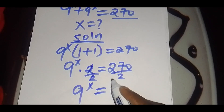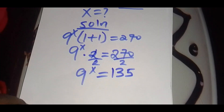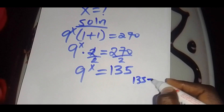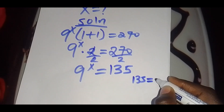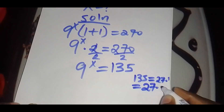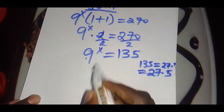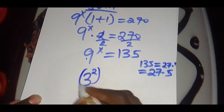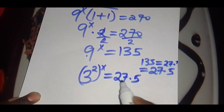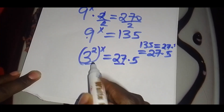So we have 9^x equals 135. Remember, 135 can be expressed as 27 multiplied by 5. We can rewrite 9^x as 3 raised to the power 2x. This is equal to 27 multiplied by 5. We can make 27 have a base of 3.